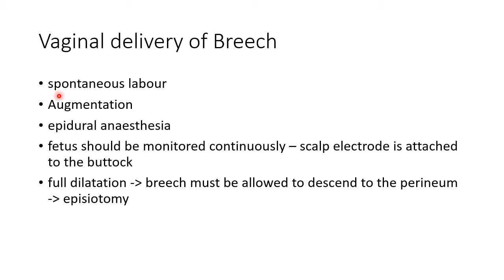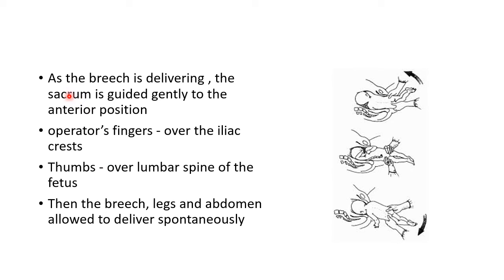For vaginal delivery of breech, labor should be spontaneous, augmentation should be avoided, and epidural anesthesia is preferred. The fetus should be monitored continuously by placing a scalp electrode to the buttock. After full dilatation of the cervix, the breech must be allowed to descend to the perineum, after which an episiotomy is done. As the breech is delivering, the sacrum is guided gently to the anterior position by placing the operator's fingers over the iliac crest and thumbs over the lumbar spine of the fetus.